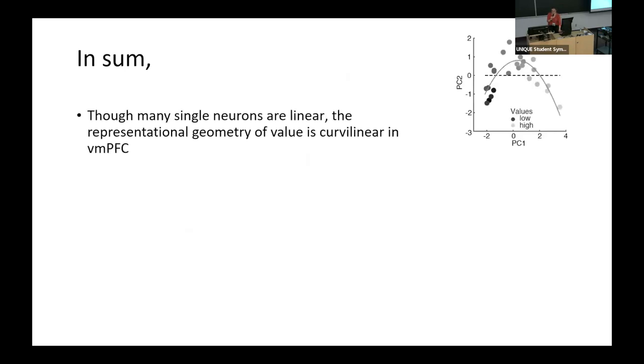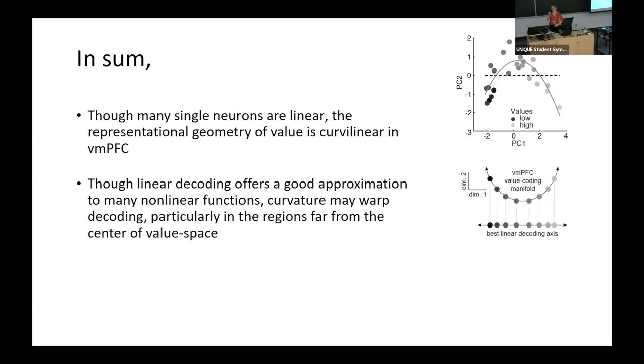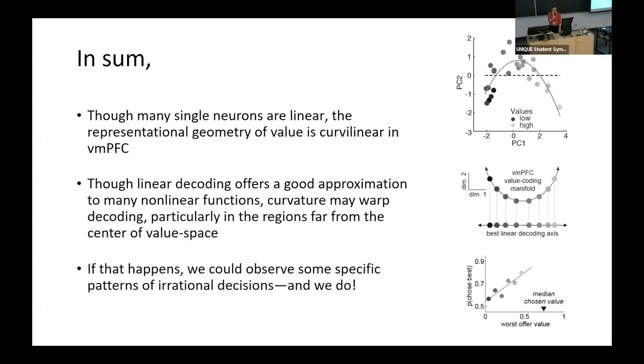So by this, I would like to conclude. So first of all, though many single neurons responses of many single neurons were linear, the representational geometry of value appears curvilinear in ventromedial prefrontal cortex. And the main takeaway message is that the linear decoding offers a good approximation to many nonlinear functions. Curvature may worsen the coding, and particularly in these regions far from the center of value space. And yes, if that happens, it may have implications to behavior or something else. So we could observe some specific patterns of irrational decisions. And we did observe those implications.